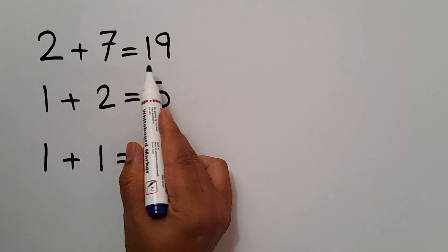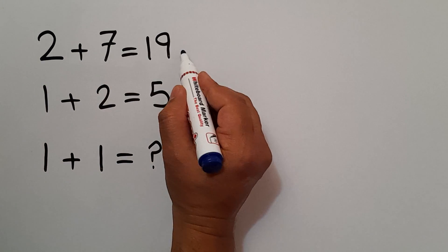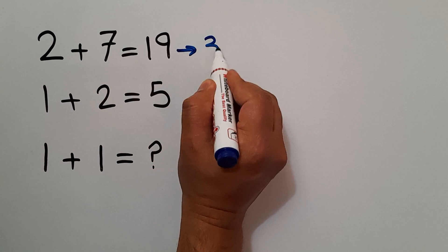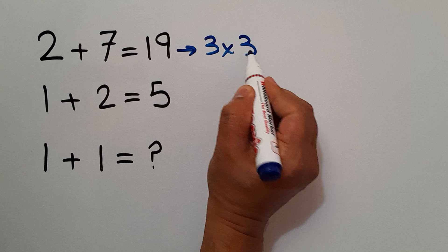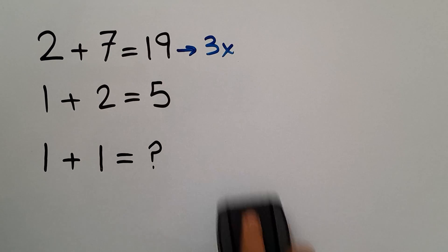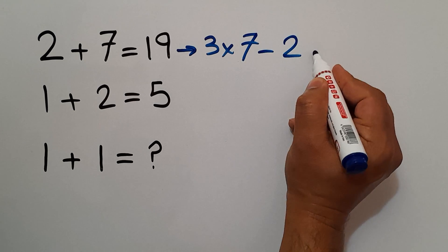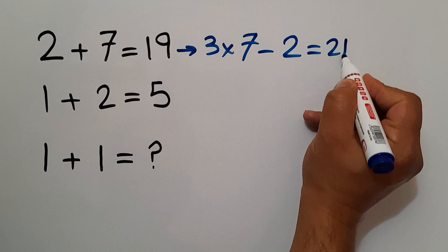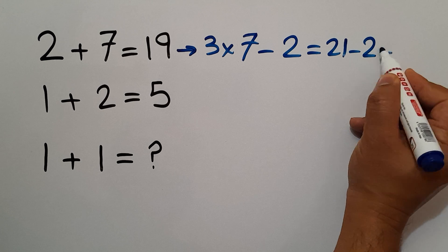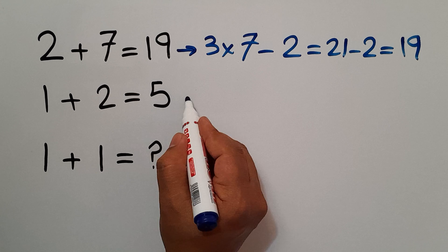In the first equation, 3 times 7 minus 2 equals 21 minus 2, which equals 19, the right hand side number. And in the second equation, 3 times 2 minus 1 equals 6 minus 1, which equals 5.